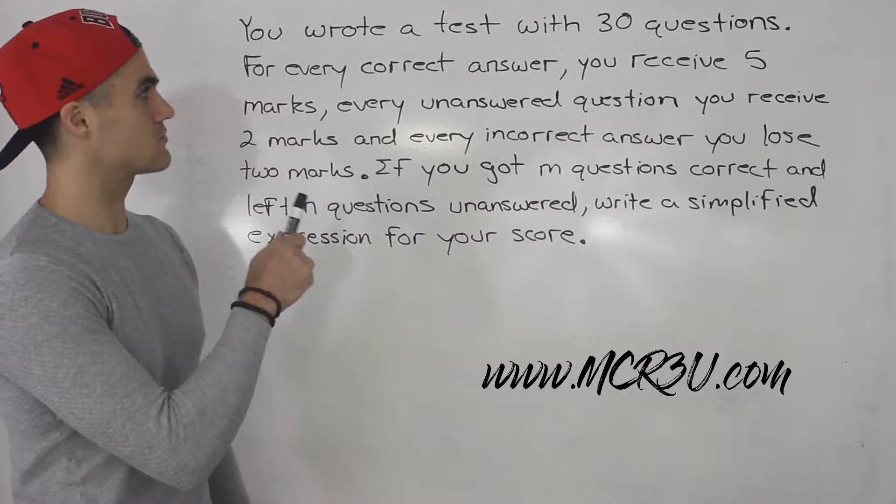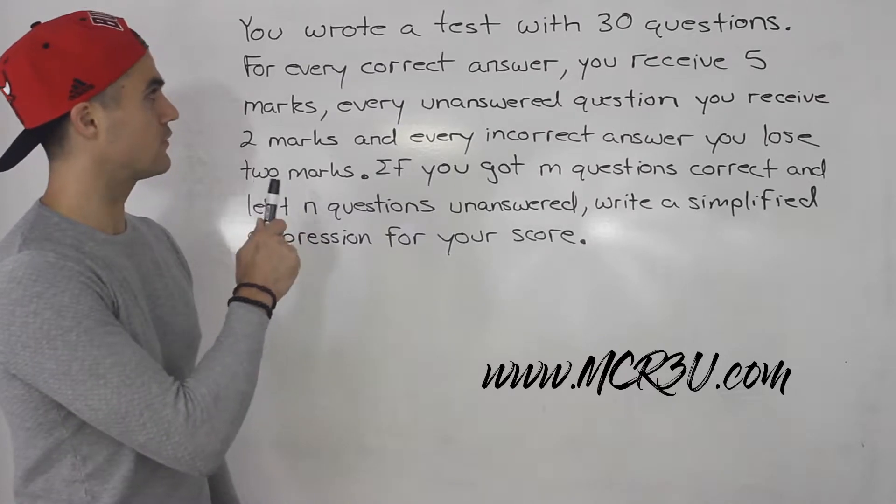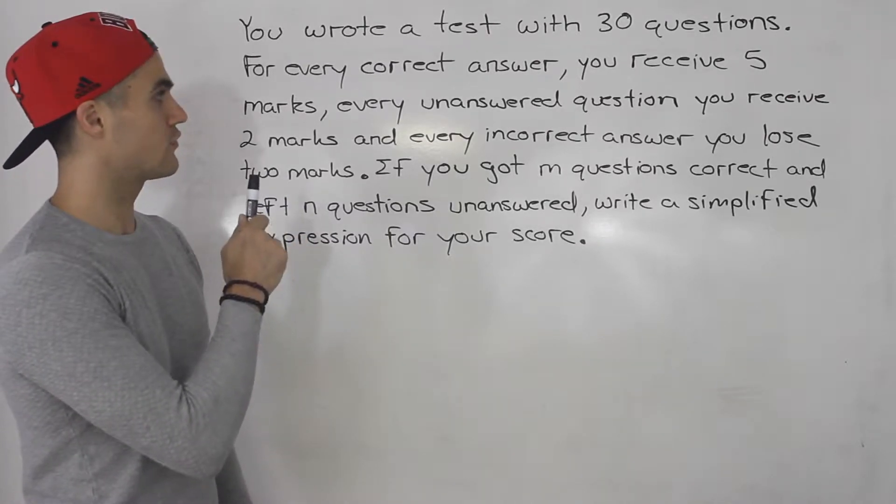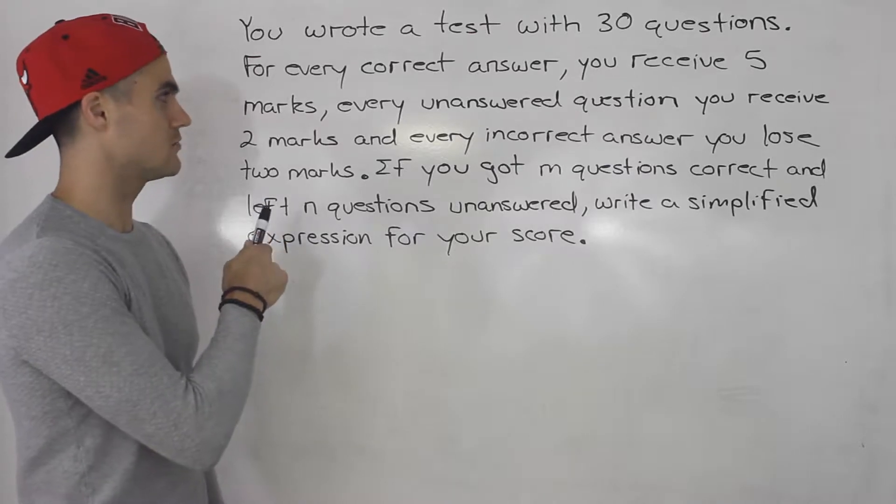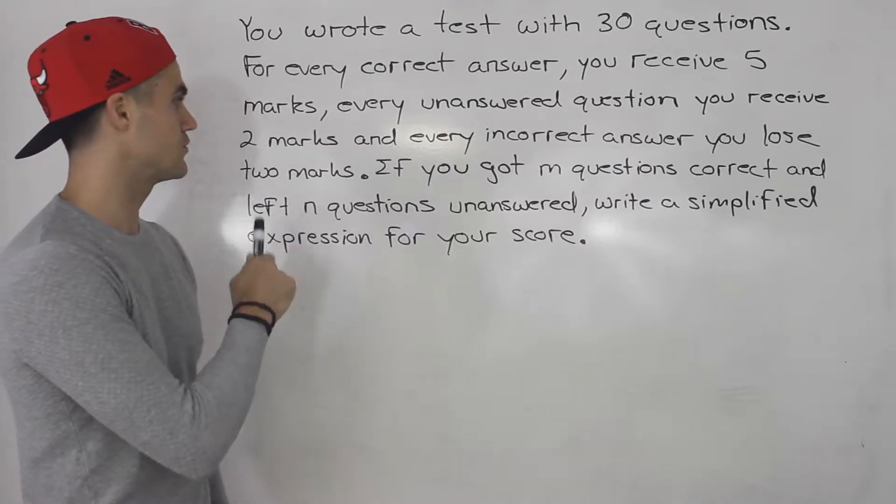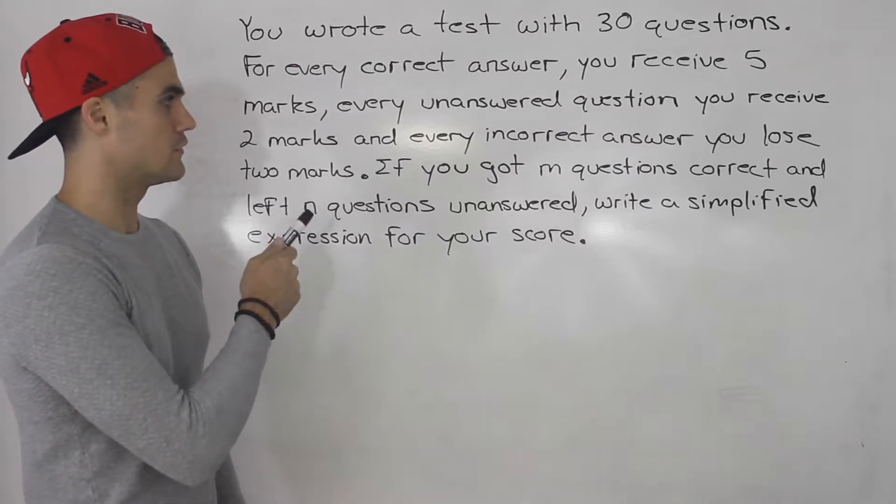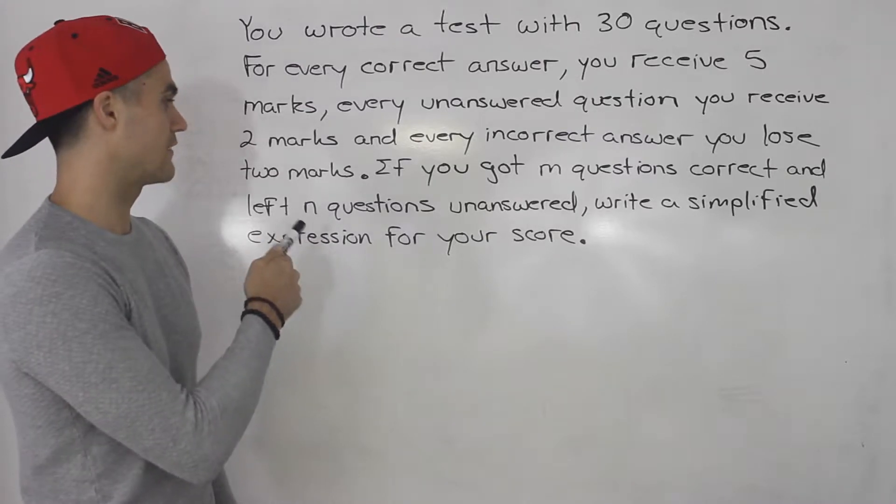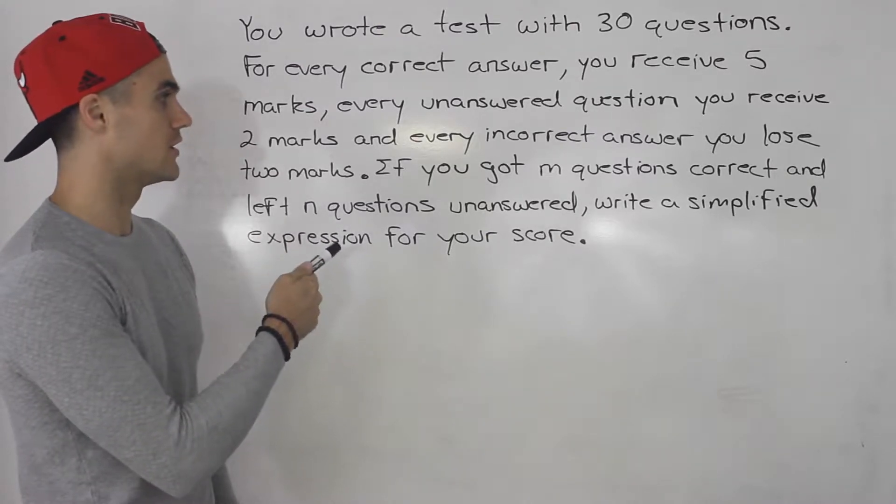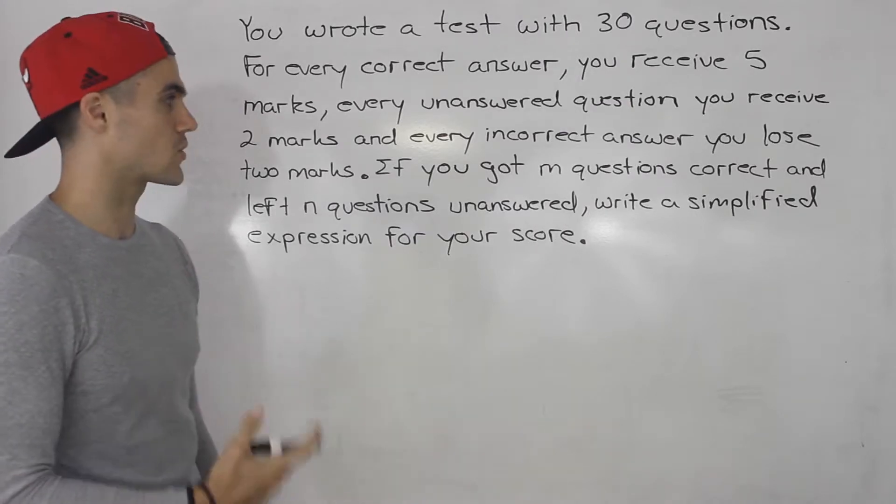You wrote a test with 30 questions. For every correct answer you receive 5 marks. For every unanswered question you receive 2 marks, and every incorrect answer you lose 2 marks. If you got M questions correct and left N questions unanswered, write a simplified expression for your score.